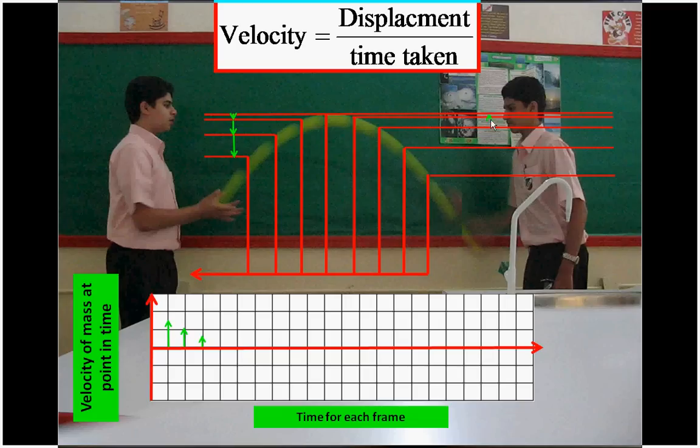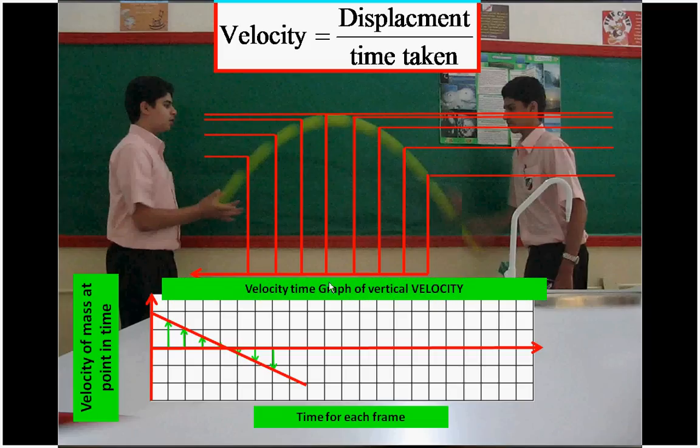If I take these arrows now, which now represent my velocity because I've divided them by the time taken, which was one, so I get a velocity time graph of the tennis ball but only in the vertical plane. And you can see that you've got deceleration, constant deceleration, and then constant acceleration.